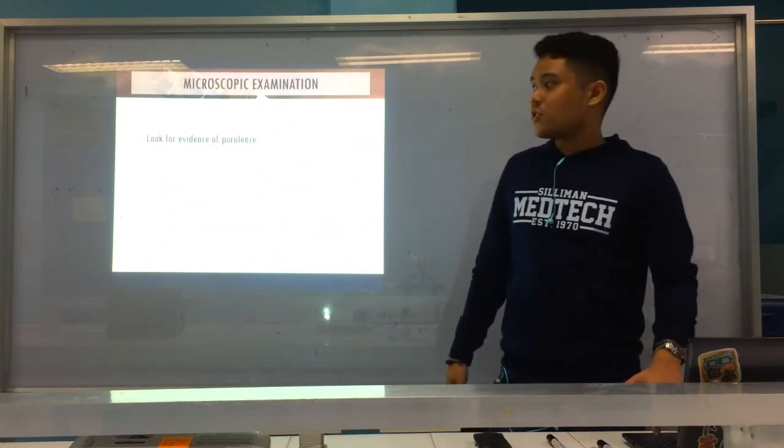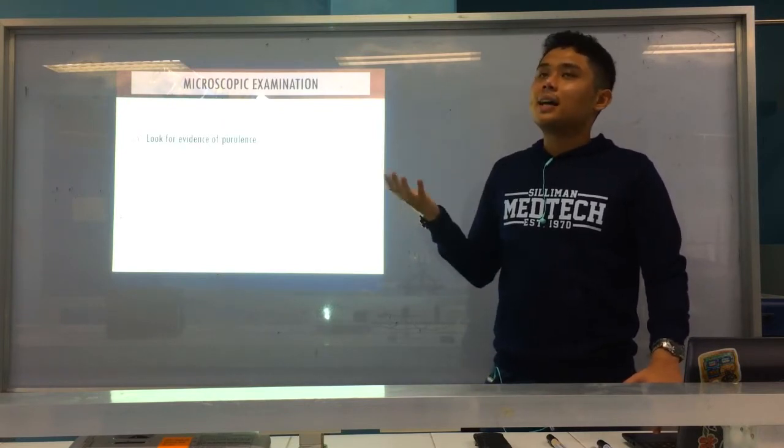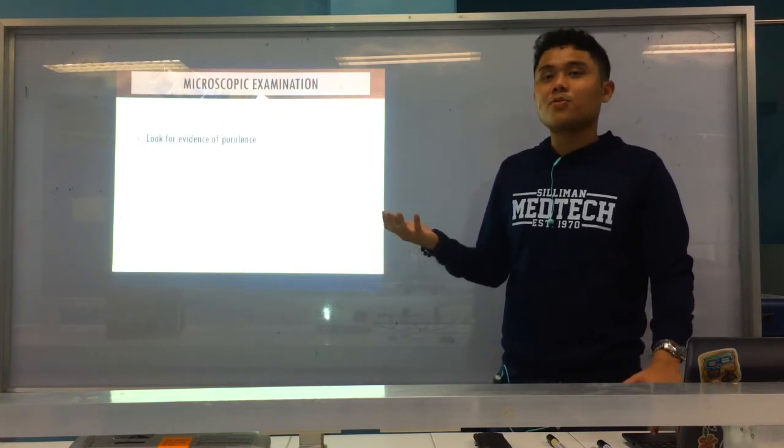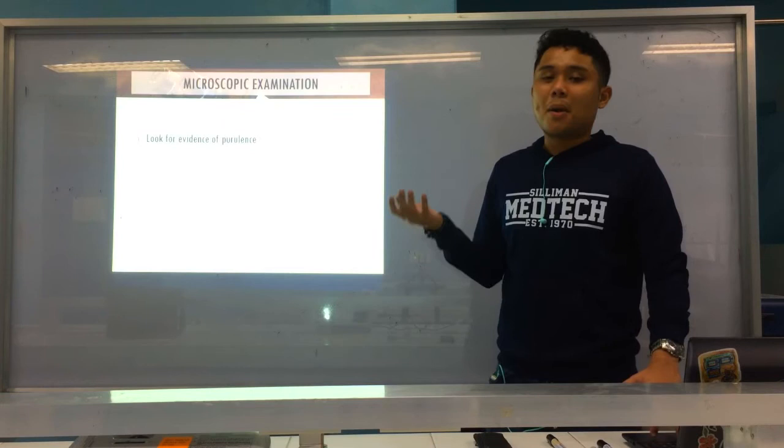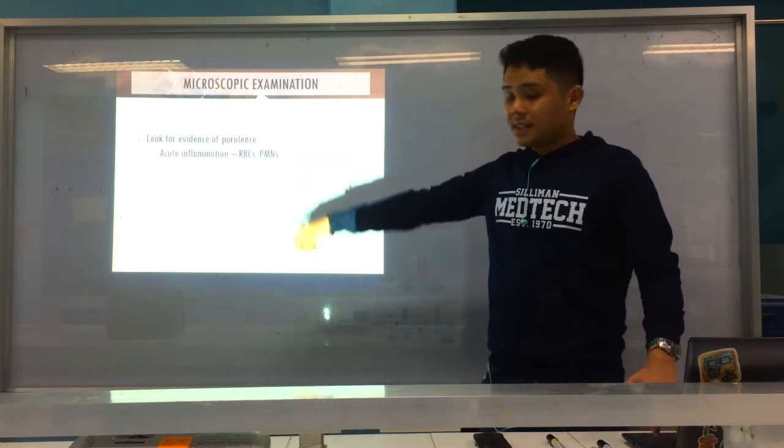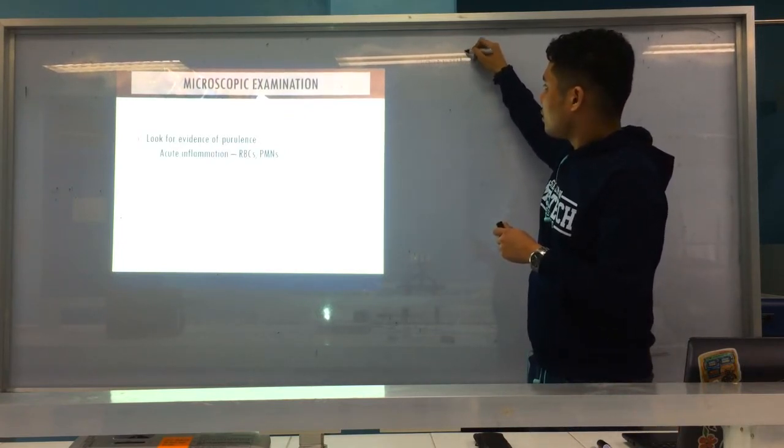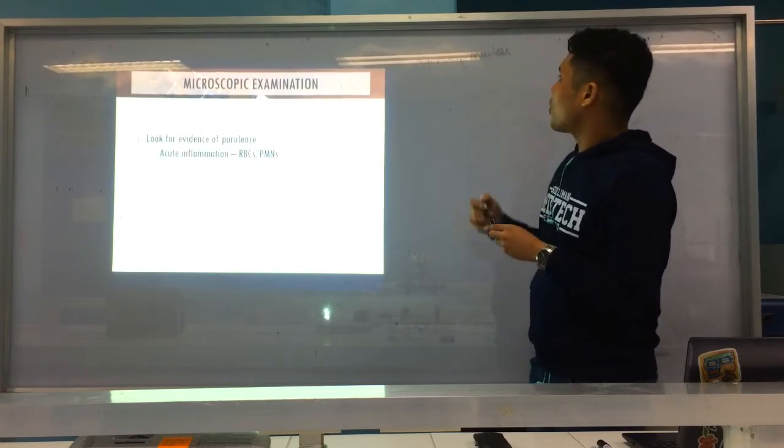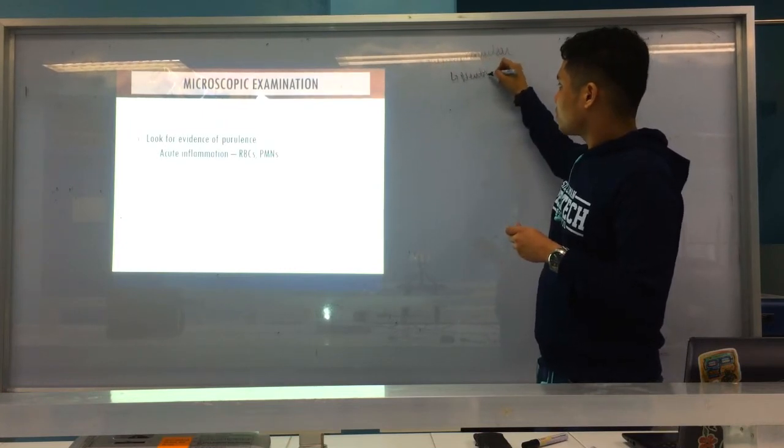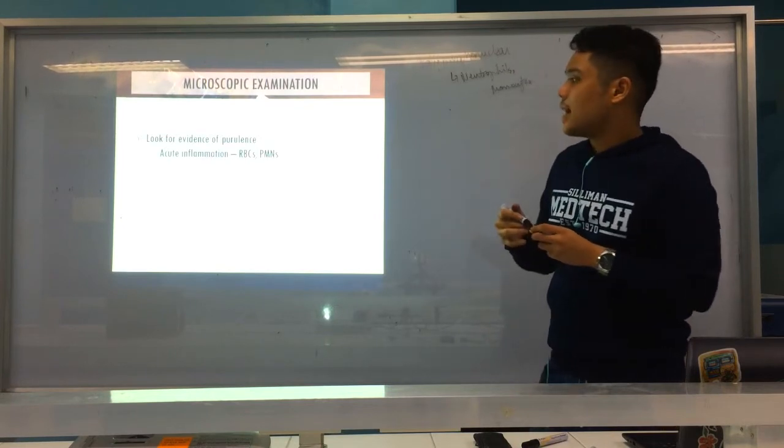We now look for evidence of purulence. When you say purulence, there's lots of, like in a way, it's not just pus, but there's evidence of infection. There are PMNs, polymorphonuclear cells, like white blood cells, neutrophils. And under acute inflammation, usually you can see RBCs or PMNs, polymorphonuclear.